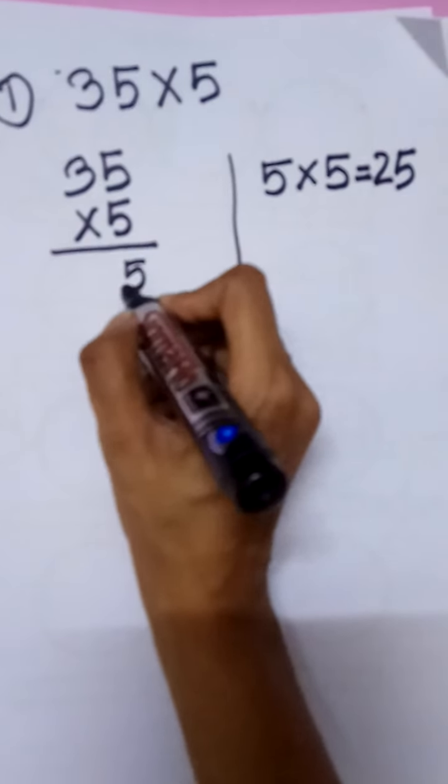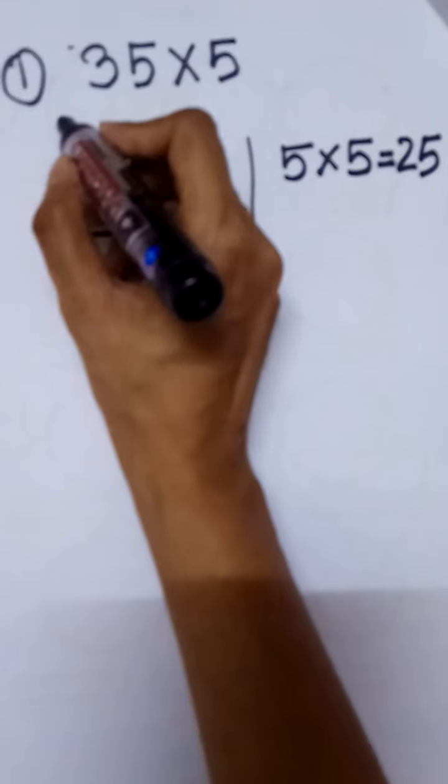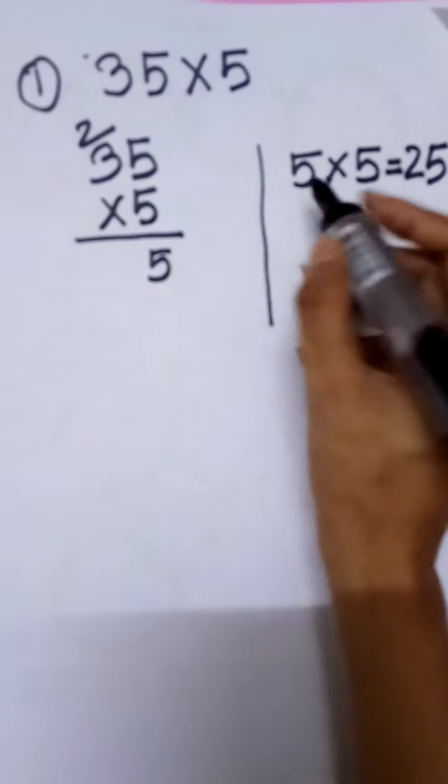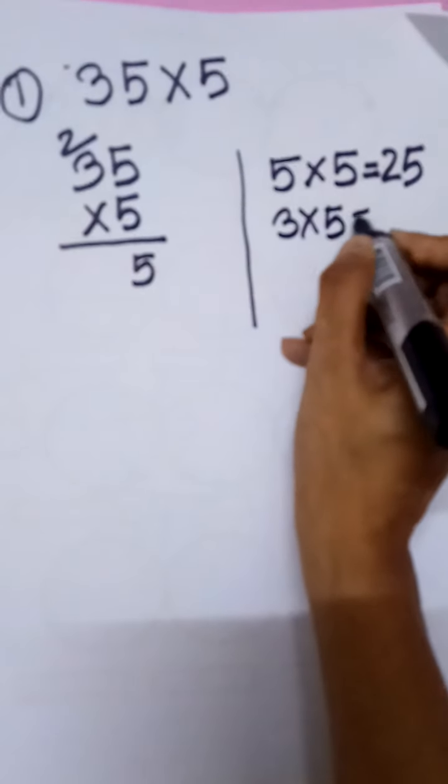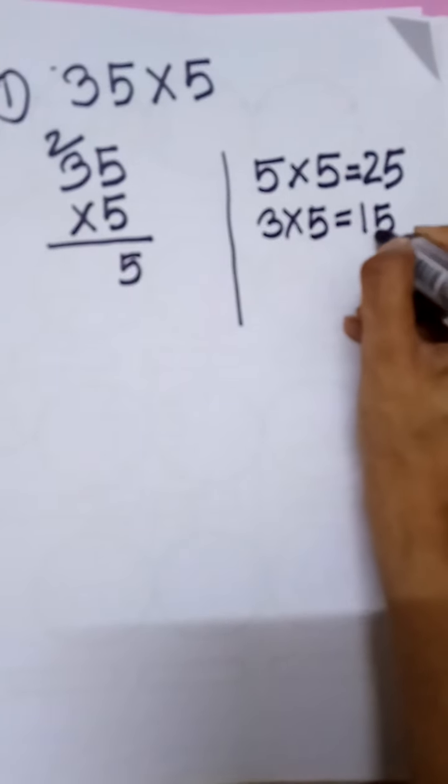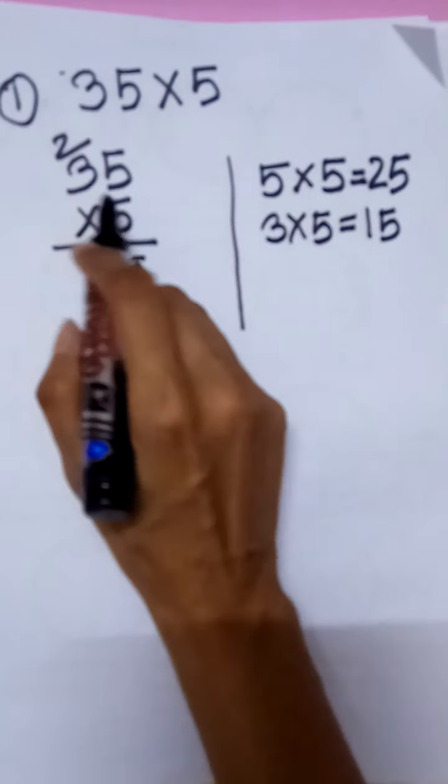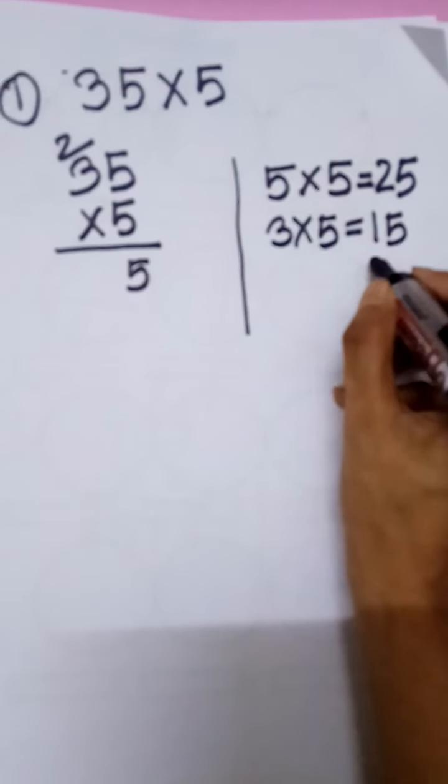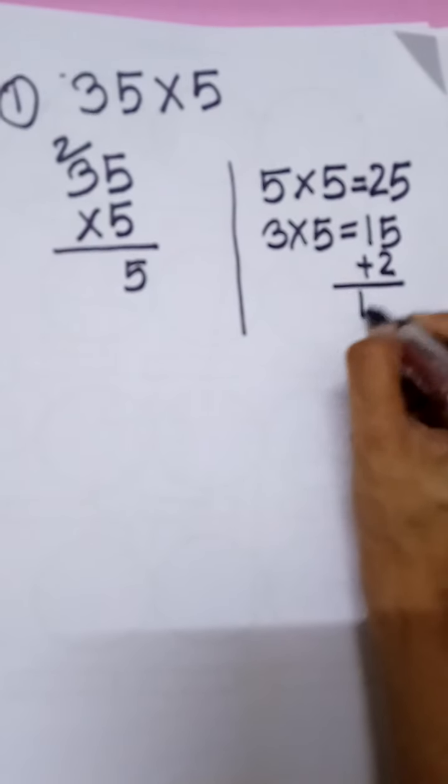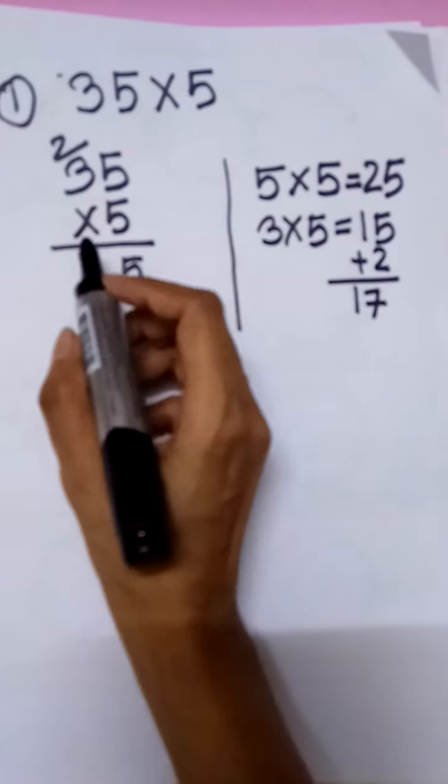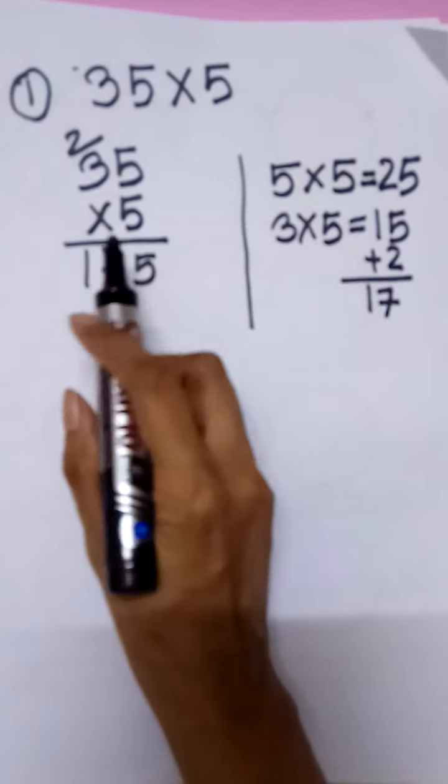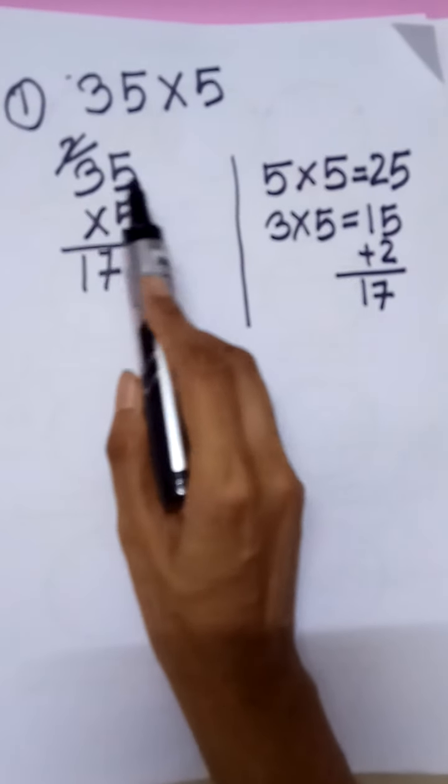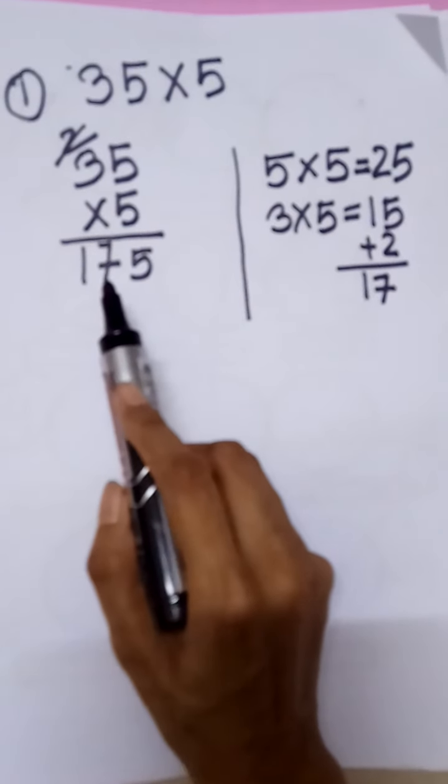Then we have to write 5 here, and carry 2. 3 times 5 in the tens multiplied by ones equals 15. The last number with first number plus the carrying 2 equals 17. Then the answer is 175. So 35 multiplied by 5, the answer is 175.